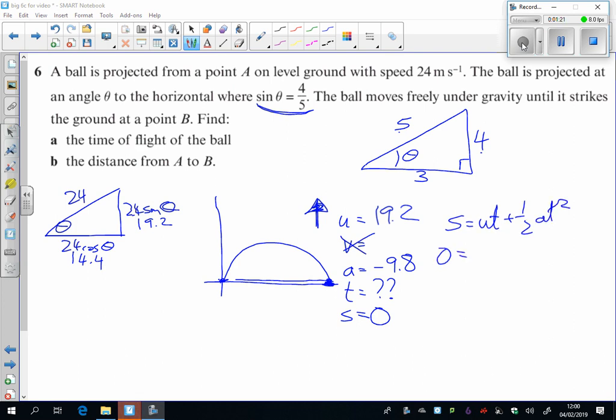We're putting in 0 equals 19.2t, 1 half times 9.8, it's 4.9, t squared.